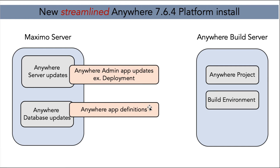We now have two components: the Maximo server and the Anywhere build server. You'll find additional key information now within Maximo. We've added updates to the Maximo Anywhere administration application. We've brought the Anywhere application definition into the Maximo database. And if you're using push notifications, you'll find a new push notification application available within Maximo.